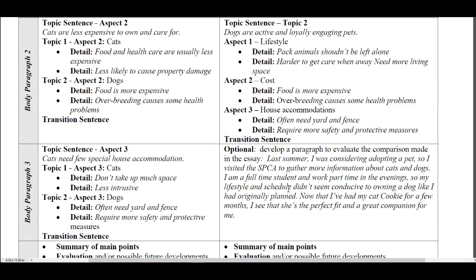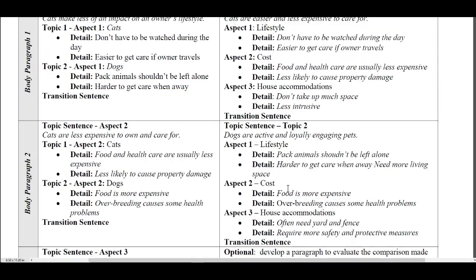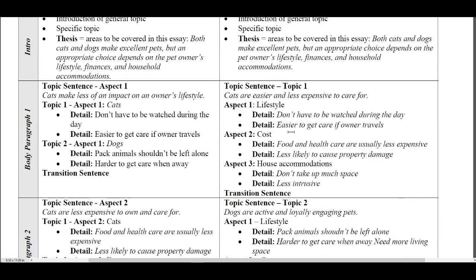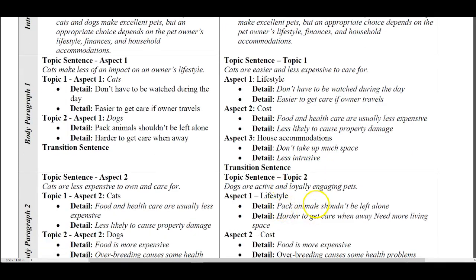Now I want to look at these two methods again. In point by point, you alternate between cats and dogs for each aspect or subcategory mentioned in the thesis statement. In the block method, you list all of the cats' points first, and then next you list all of the dogs' points.